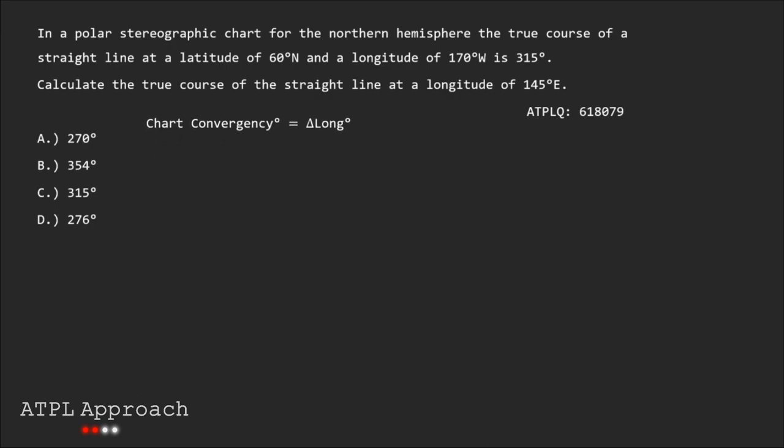So they've thrown us the curveball here because they've told us a latitude of 60 degrees north and if we were to use that as our parallel of origin we would have got one of the wrong answers here. Our change of longitude here is 45 degrees. To get this we add 10 degrees to 170 west to get to our anti-meridian and then it's another 35 degrees from the anti-meridian to 145 degrees east.